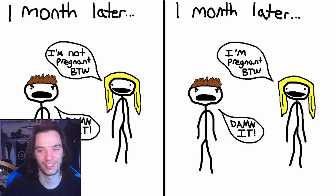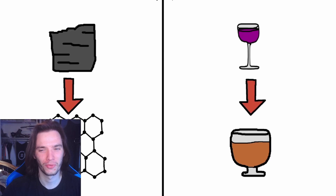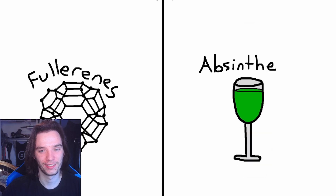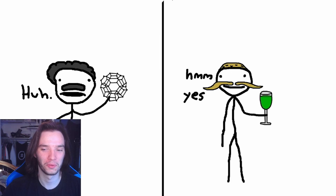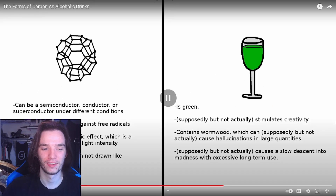Sam: 'Graphene is like brandy. It's similar to graphite in structure but it's put through a process to make it more pure, and as a result it's much stronger. Fullerenes are like absinthe. It's not as mainstream as the other varieties, mostly only being used by the intellectual types. It's also claimed to have a bunch of—'